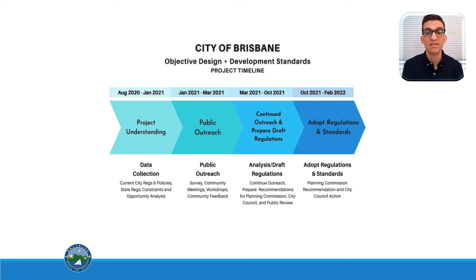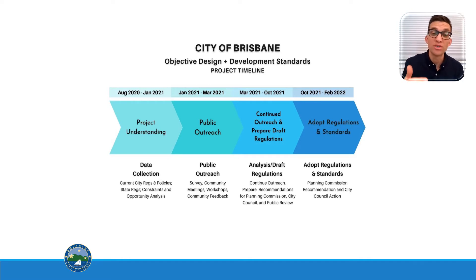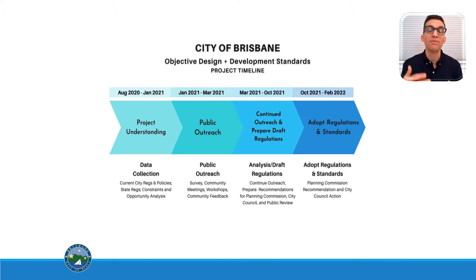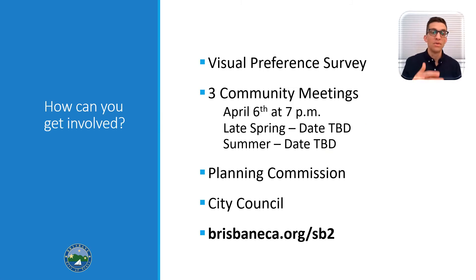In terms of the objective design and development standards project timeline, as you can see, we're already through phase one and into the tail end of phase two right now. We've had a planning commission meeting, and April 6, 2021 is going to be the first community meeting. Because of the pandemic and COVID, it's going to be virtual. There are a total of three community meetings, and we're hopeful that later in the summer at least one could be in person. We're then going to go into the adoption process later this year, aiming to wrap it up in February of 2022.